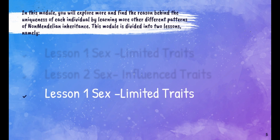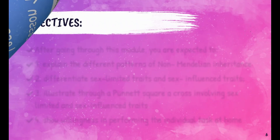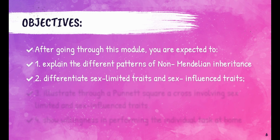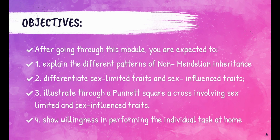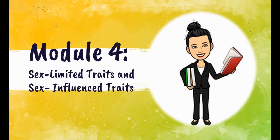This module is divided into two lessons: Lesson 1, Sex-Limited Traits, and Lesson 2, Sex-Influenced Traits. So after going through this module, you're expected to explain the different patterns of non-Mendelian inheritance, differentiate sex-limited traits and sex-influenced traits, illustrate through a Punnett square a cross involving sex-limited and sex-influenced traits, and show willingness in performing the individual task at home.